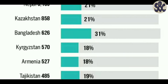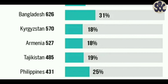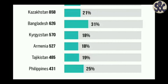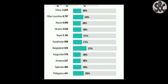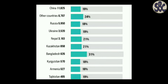Kyrgyzstan: 570 students appeared, 18% passed. Armenia: 527 students appeared, 18% passed. Tajikistan: 485 students appeared, 19% passed. Philippines: 431 students appeared, 25% passed. So Kazakhstan and Nepal are at 21%, China at 19%, and Ukraine at 19%.